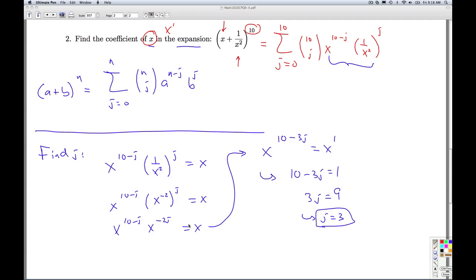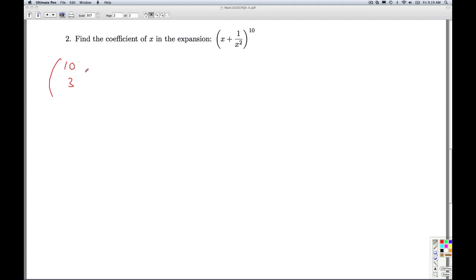So I go back, j is 3. I plug 3 in and I get 10 choose 3 x to the 10 minus 3, 1 over x squared cubed. So that's 10 choose 3 x to the 7th times 1 over x to the 6th, which is 10 choose 3 times x. And so the coefficient of x is going to be 10 choose 3. Okay, so what is 10 choose 3? Well, by definition,